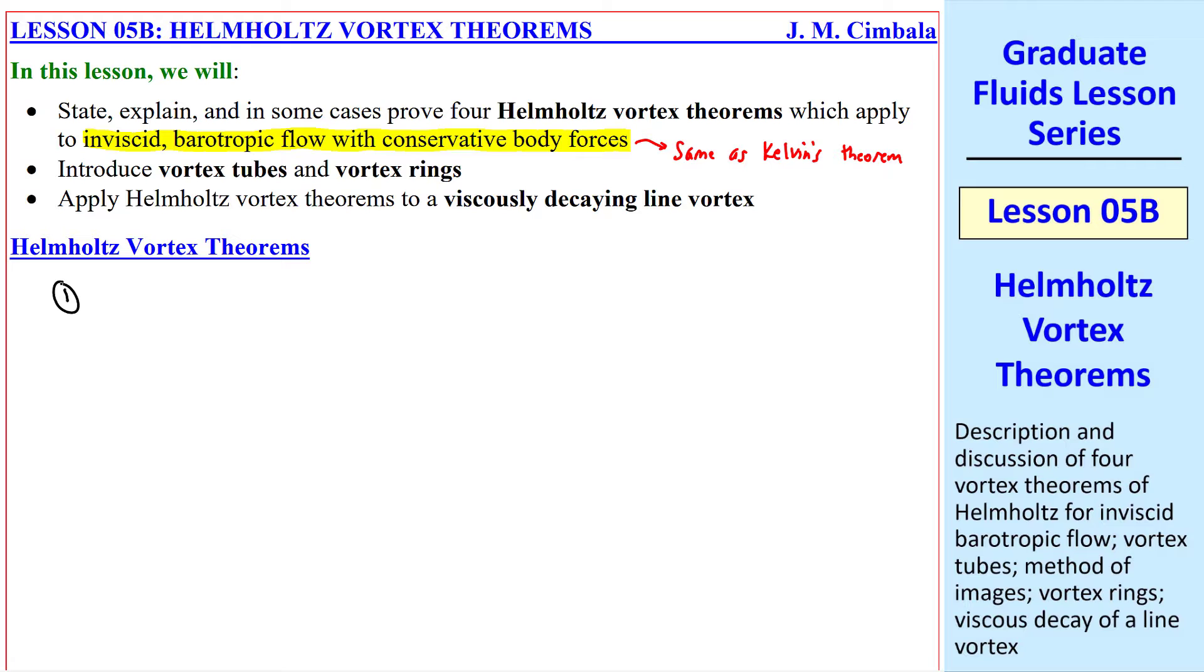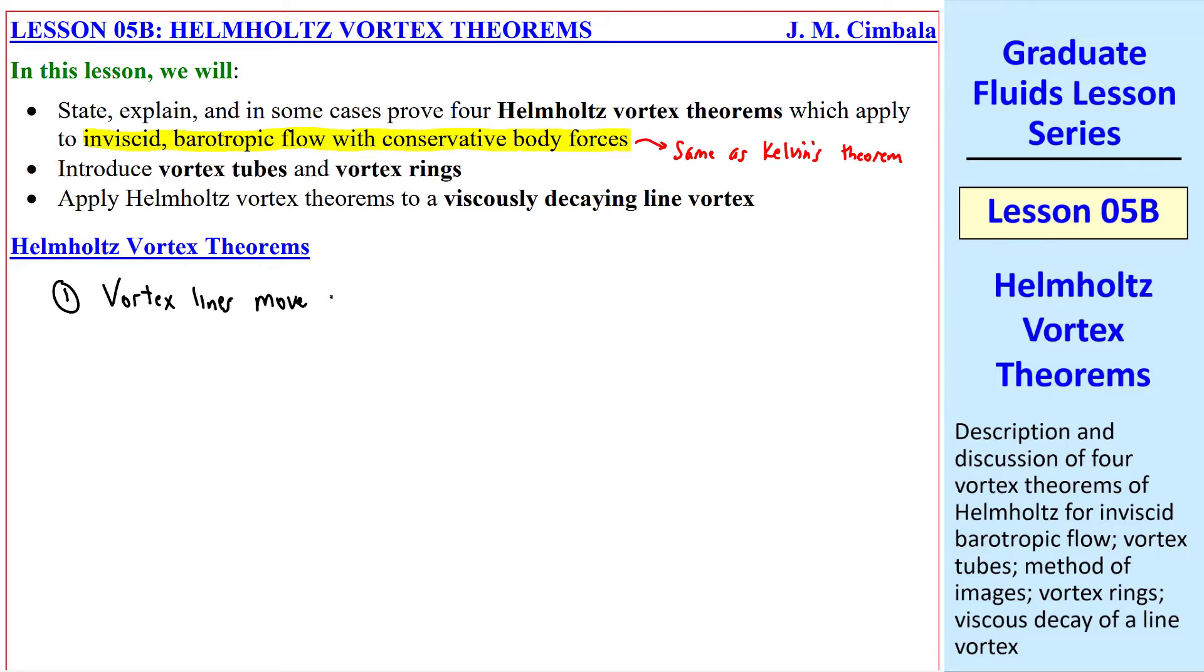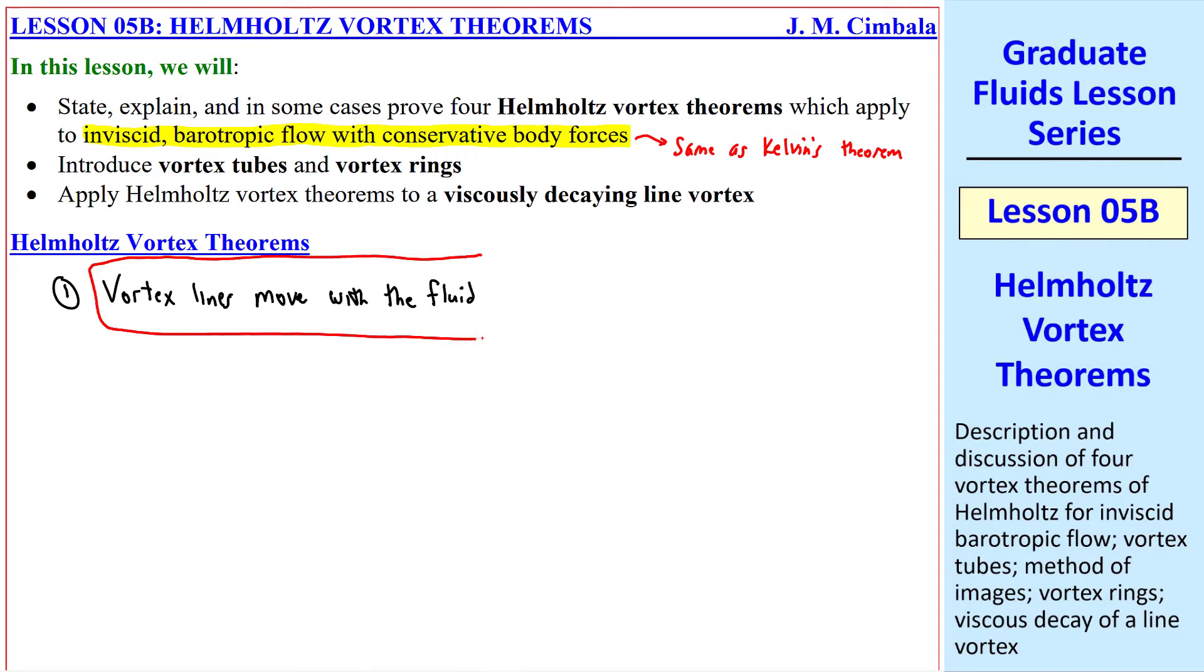Helmholtz Theorem number one: vortex lines move with the fluid. This follows directly from Kelvin's Circulation Theorem. If these are our streamlines, and we have some vortex line with vorticity pointing that way, which means it's spinning like this, and we define some closed contour C that includes that vortex line, and this is at time t.